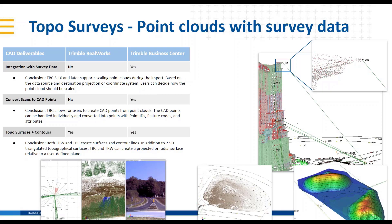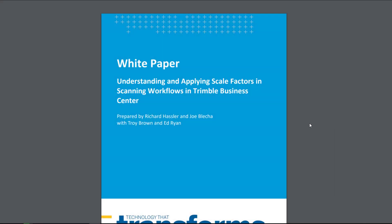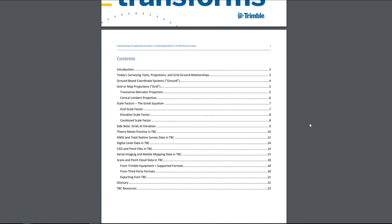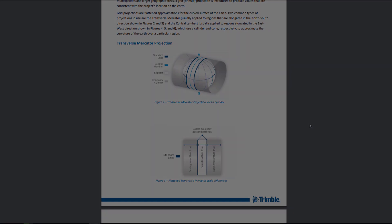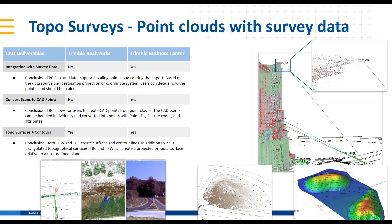We're hoping to have a pretty expansive white paper out soon — it's in the final draft stages — covering scale factors, survey data, point cloud data, and being able to convert scans to CAD points and turn those into survey points or stakeout points in the field. Trimble Business Center allows you to do that, and then create topo surfaces and contours. Both RealWorks and TBC are good for that, including 2.5D triangulated topographical surfaces.